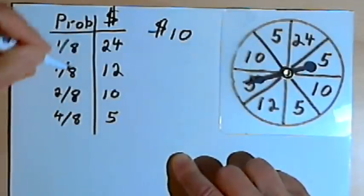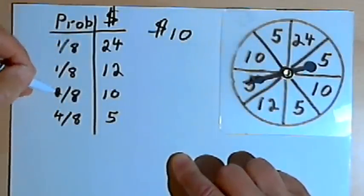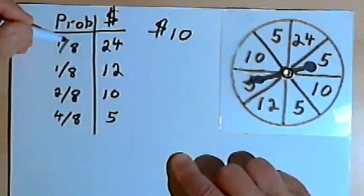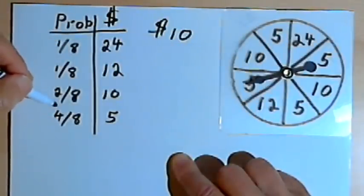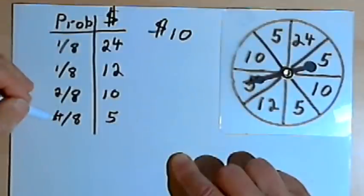Now if I add up all those probabilities, I've got one-eighths plus one-eighths plus two-eighths plus four-eighths, that adds up to 8 over 8, which is 1. And we want that. We want to make sure we've accounted for all the probability.